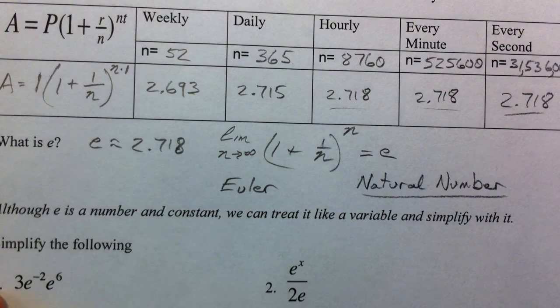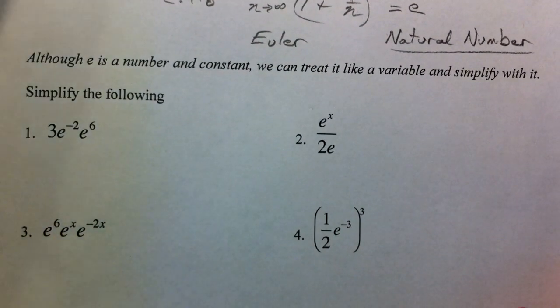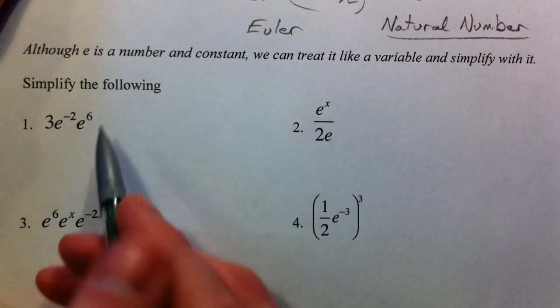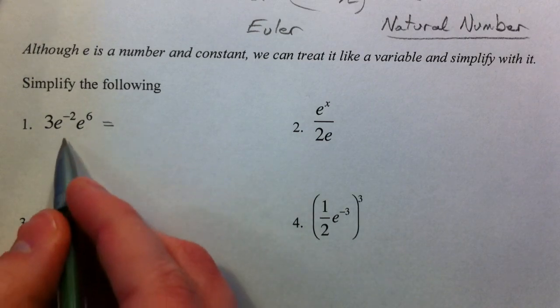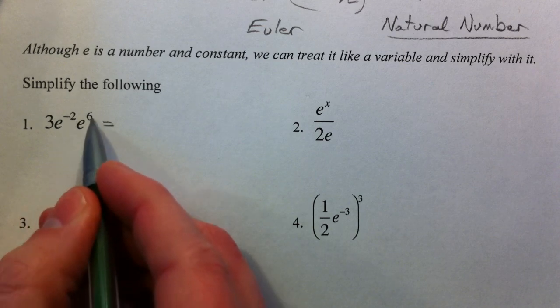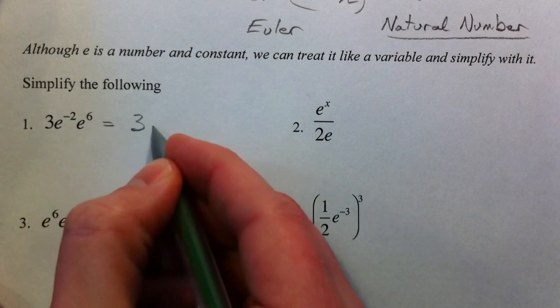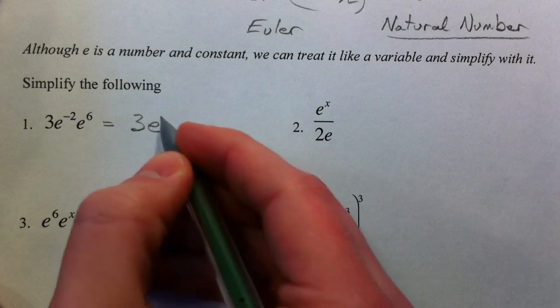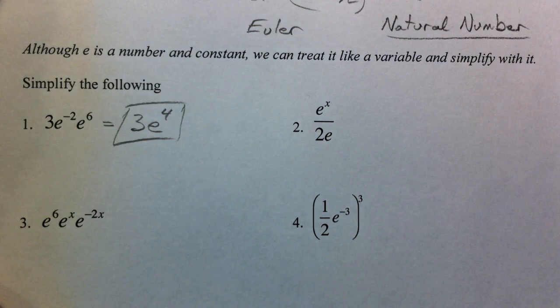First thing we're going to do is just mess with it kind of like it was a variable, and simplify some things. So 3E to the negative second and E to the sixth. And so just like you would if this was X squared and X to the sixth, you would add the exponents. So 3 times E to the fourth power.